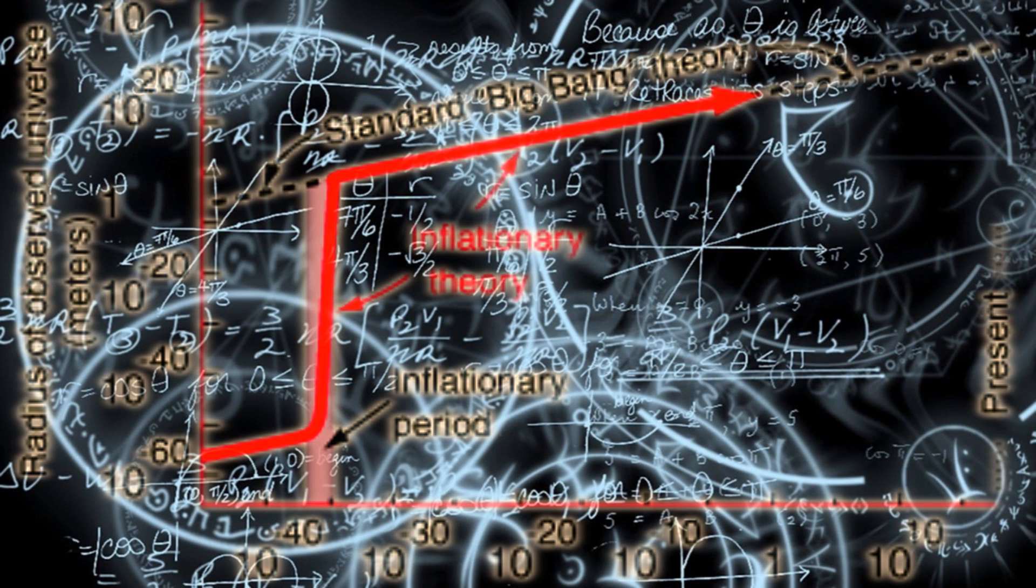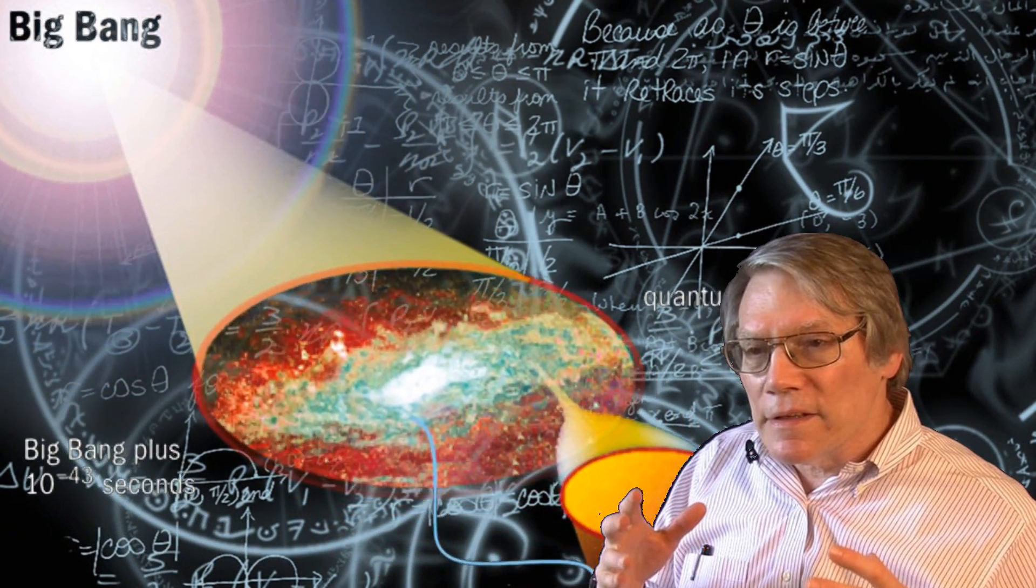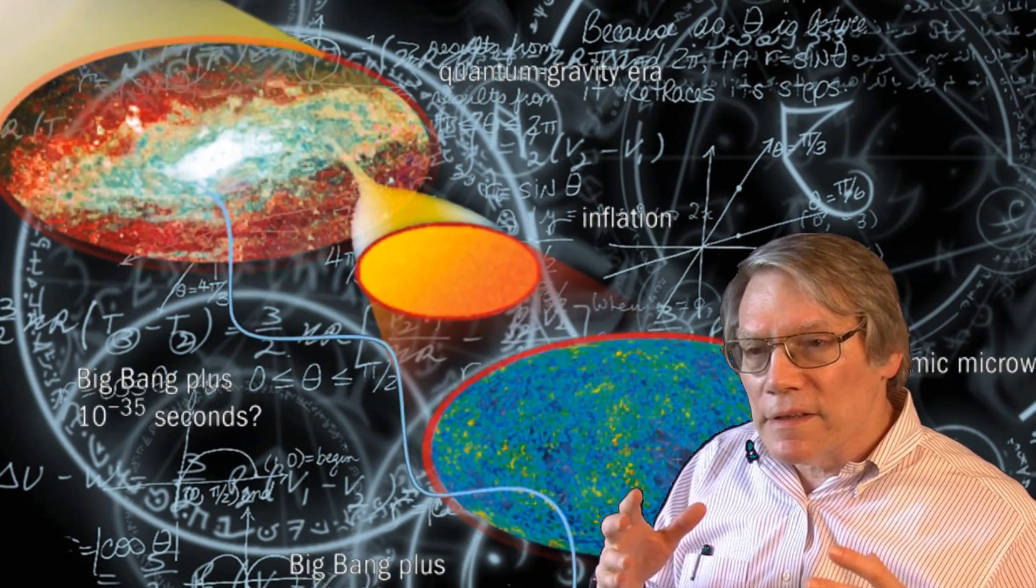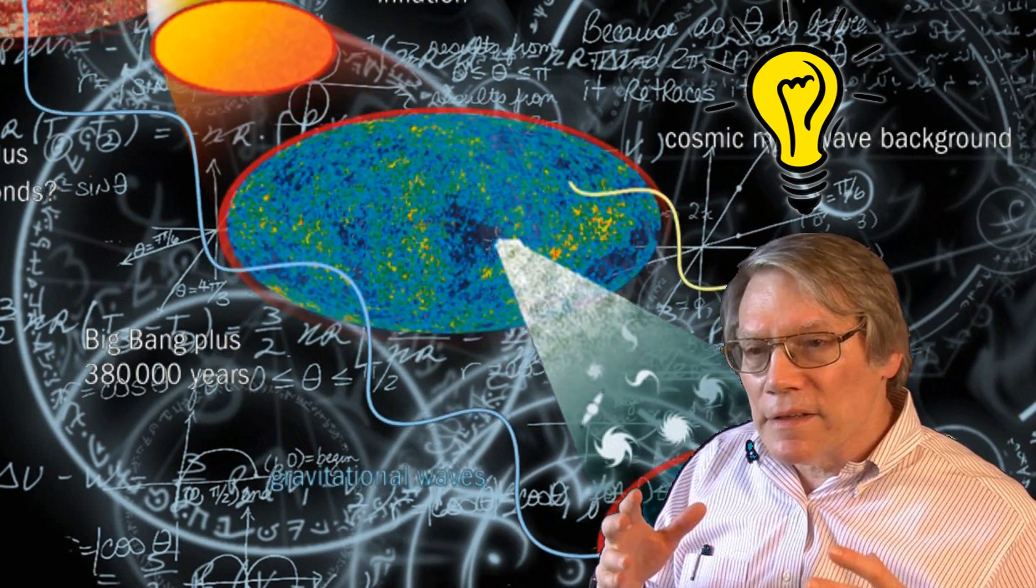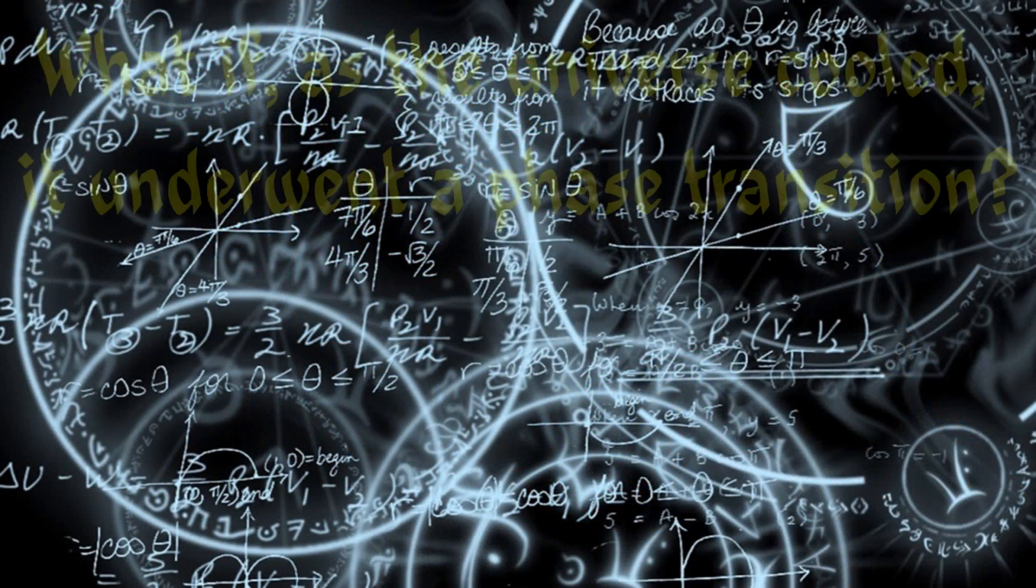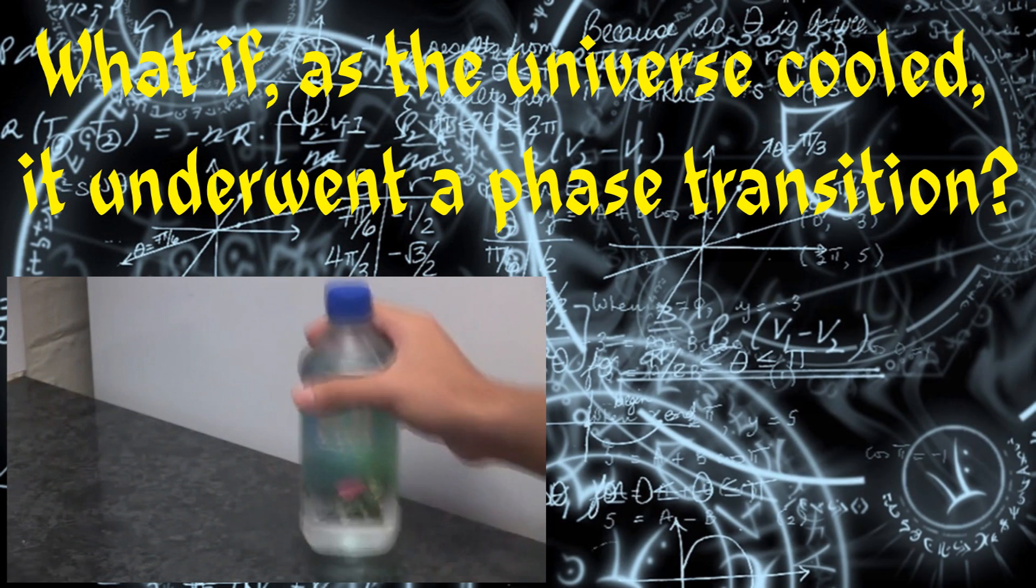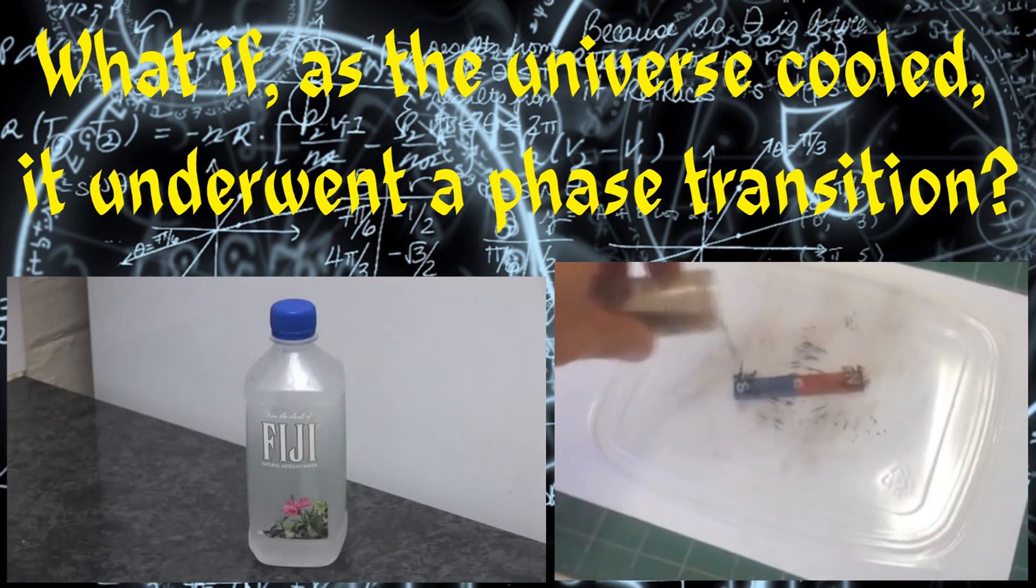Alan Guth, a particle physicist, was thinking about processes that could have occurred in the early universe that might have been relevant for understanding this problem when he came up with an absolutely brilliant realization. If, as the universe cooled, it underwent some kind of phase transition, as occurs for example when water freezes to ice or a bar of iron becomes magnetized as it cools, then the horizon problem could be solved.